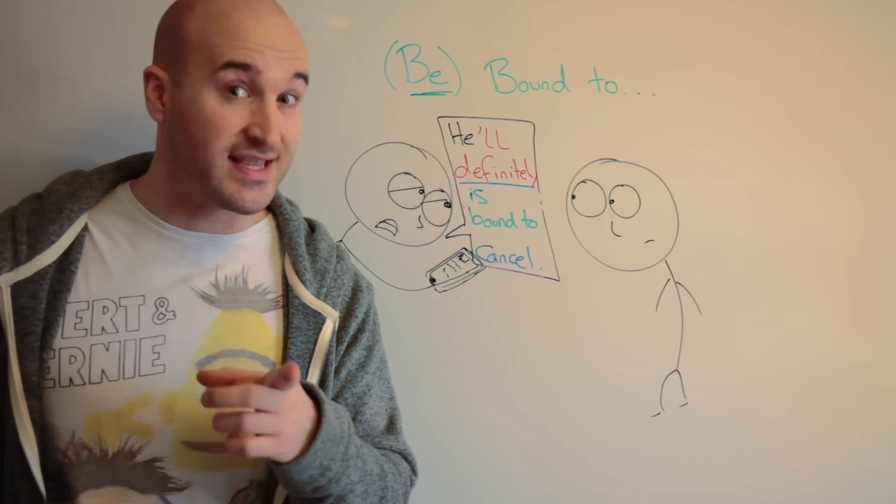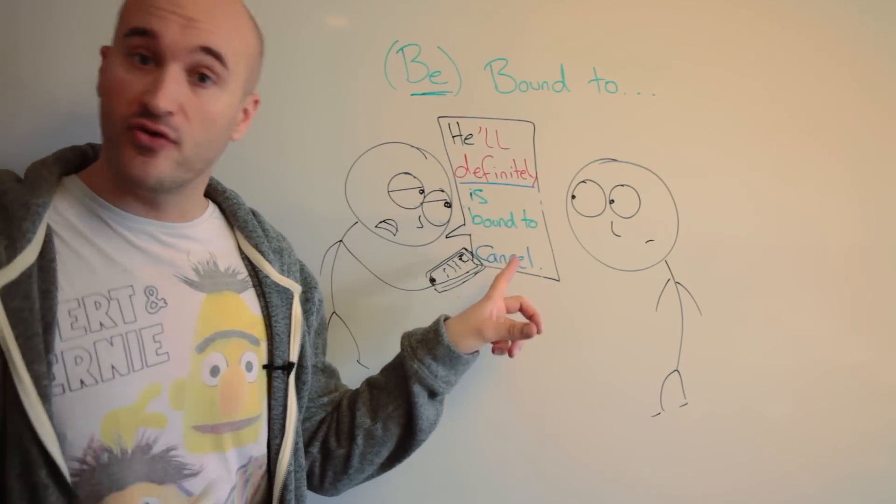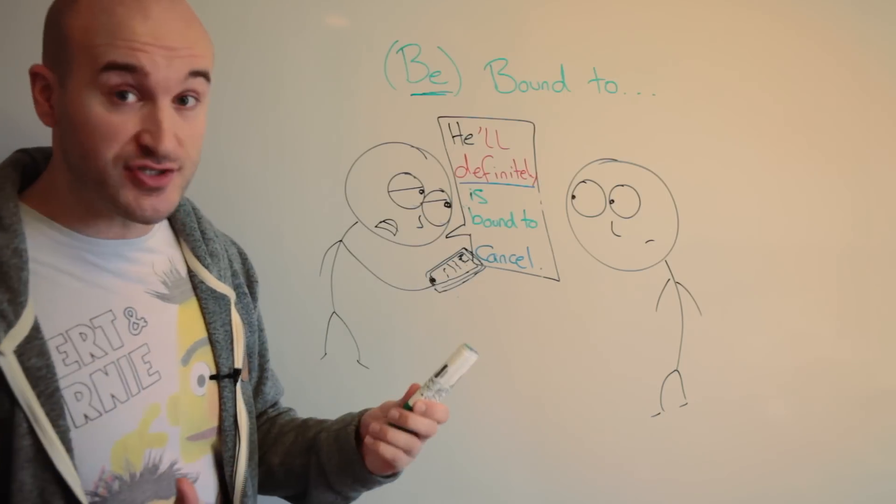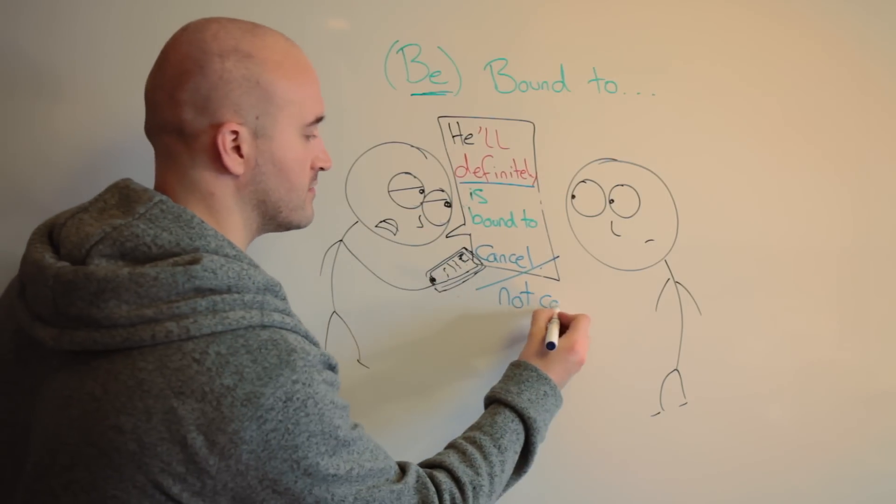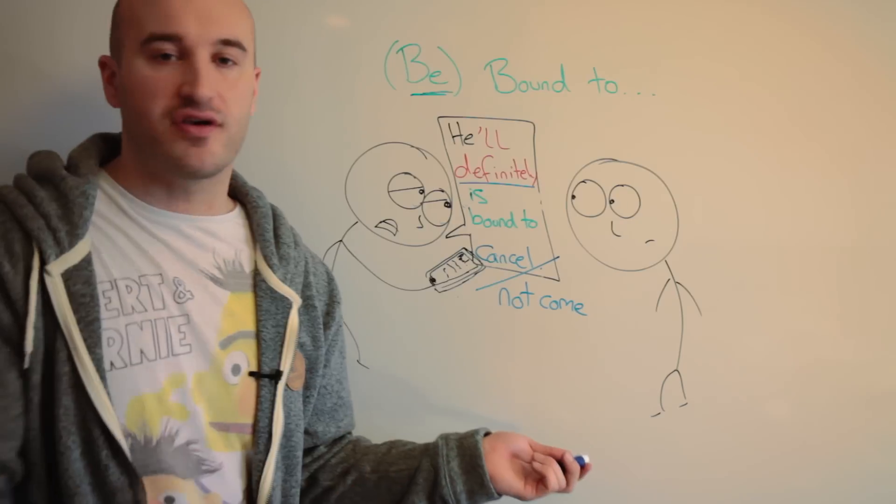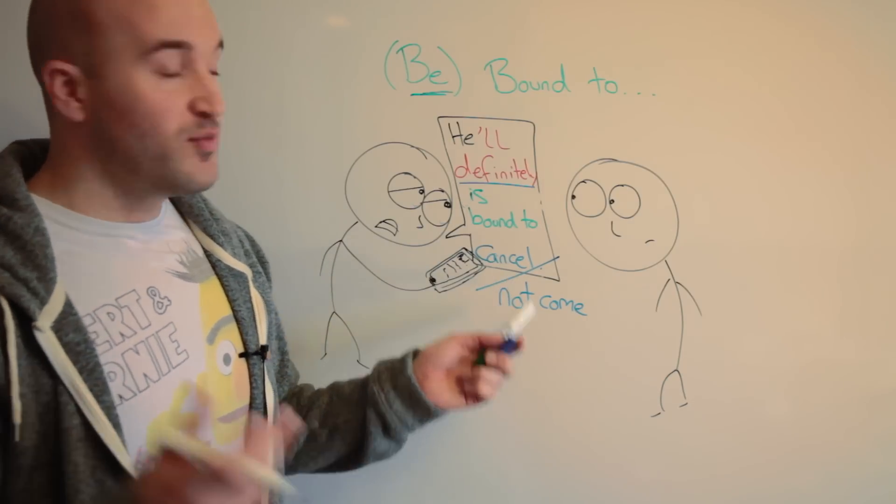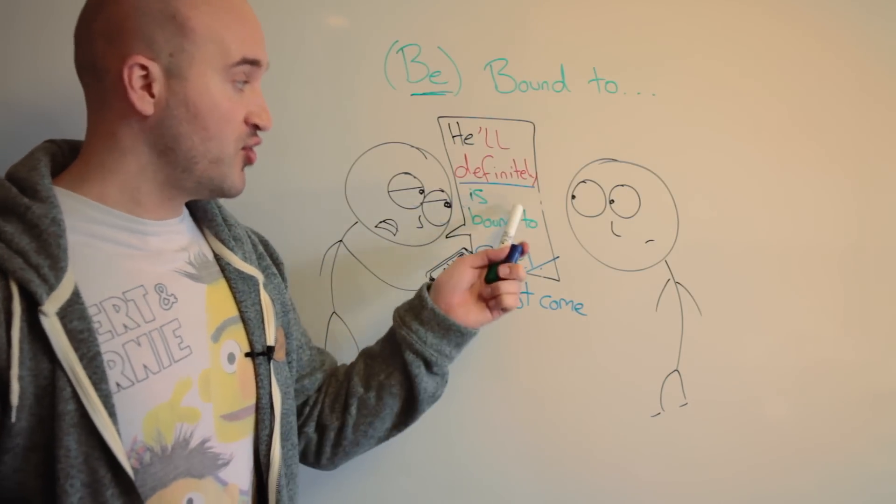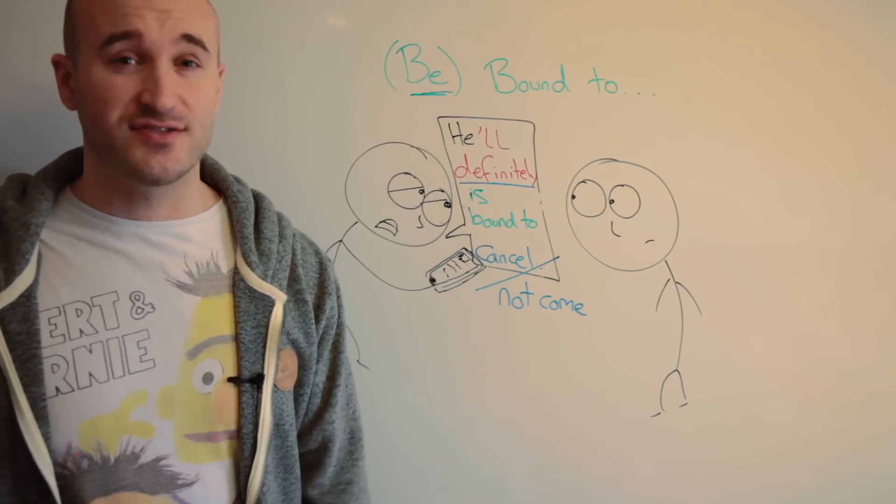How would you use this in the negative? Well, we just put not before the verb. So we could just say he's bound to not come, or we could say he's bound not to come. That's also possible.